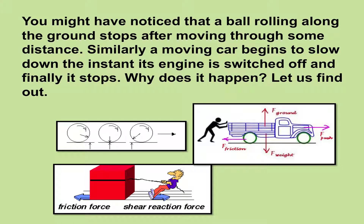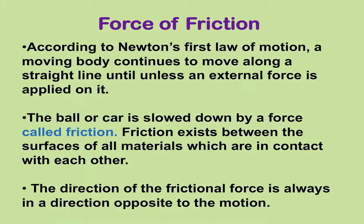Now let us come to the concept of friction. A ball rolling along the ground stops after moving through some distance. Similarly, a moving car begins to slow down the instant its engine is switched off and finally it stops. According to Newton's first law of motion, a moving body continues to move along a straight line until unless an external force is applied on it. In fact, the ball or car is slowed down by a force called friction. Friction exists between the surfaces of all materials which are in contact with each other, and the direction of the frictional force is always opposite to the motion.